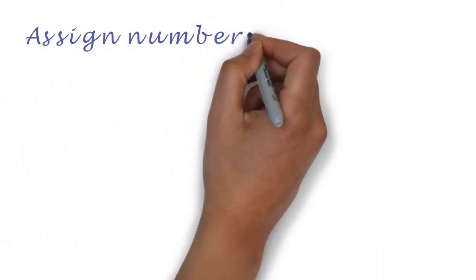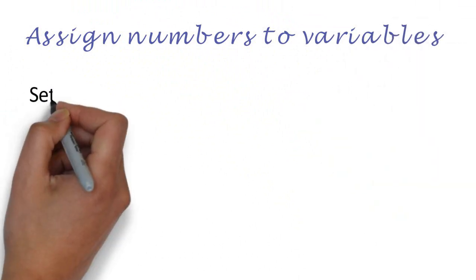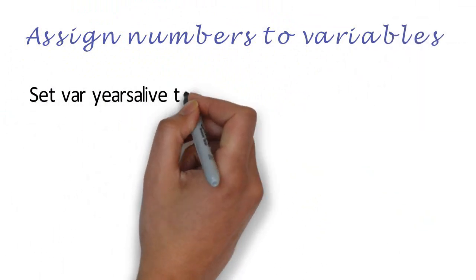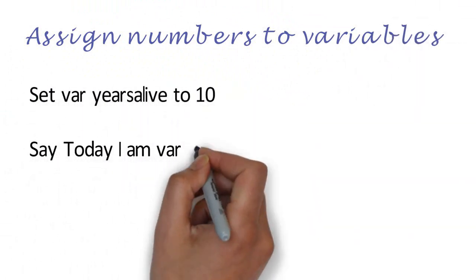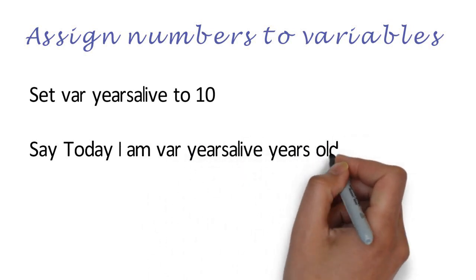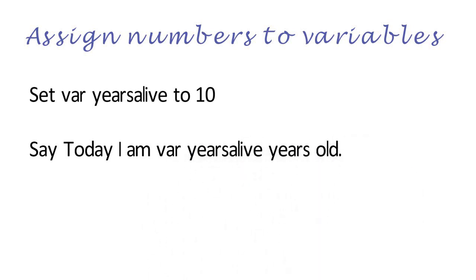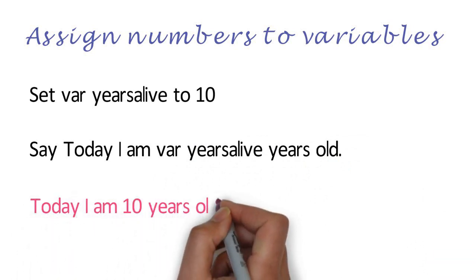We can also assign numbers to variables. Set variable years alive to 10. Say today I am variable years alive years old. Write down on your whiteboard what you think this would display. Did you write this?